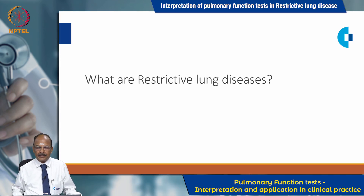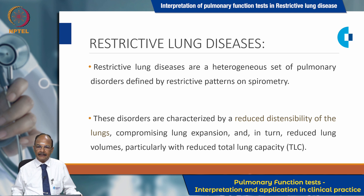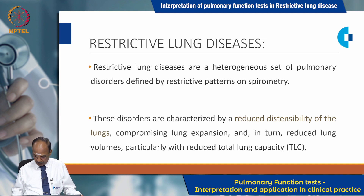What are restrictive lung diseases? Restrictive lung diseases are a heterogeneous set of pulmonary disorders defined by restrictive patterns on spirometry. These disorders are characterized by a reduced distensibility of the lungs, compromising lung expansion, and in turn, reduced lung volumes, particularly with reduced total lung capacity.